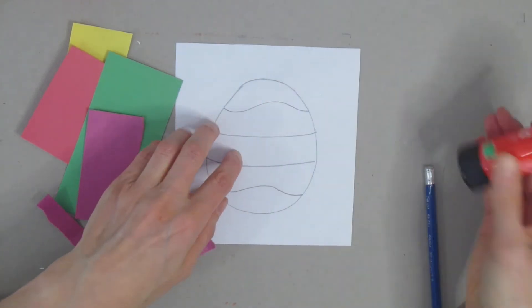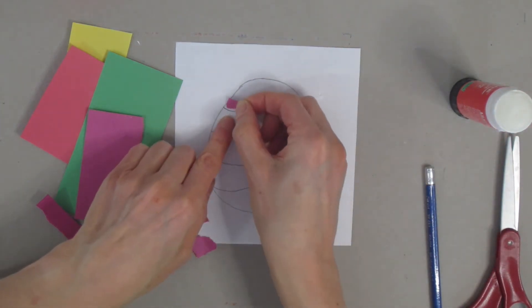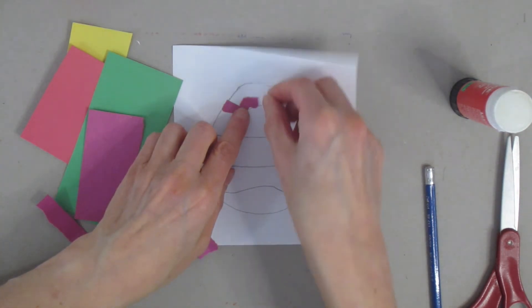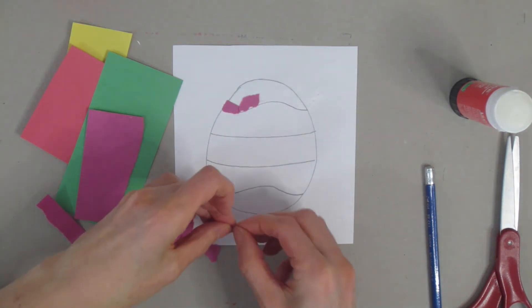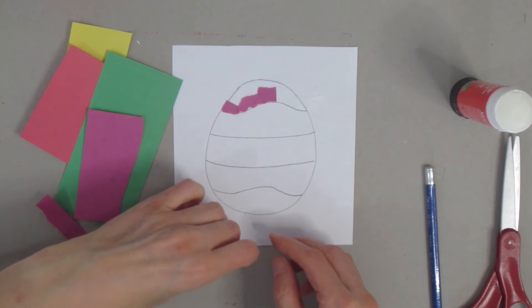Don't worry if it goes over top of your lines - we are going to trim later. Here I'm going to start right where my line comes down and curves, and I'm going to put my little pieces on. You can start wherever you like, but I like to start here just to help me make sure that I get that curved line in.